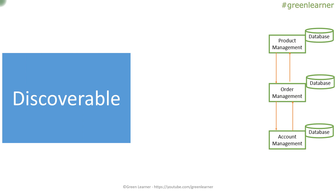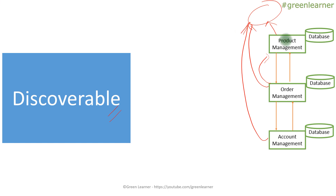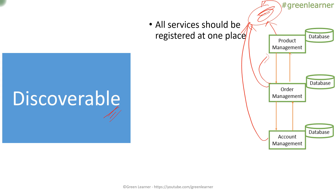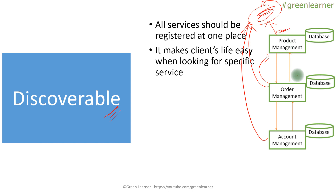The next principle is discoverable. In real time you may have many services, so each service should have information about how to call other services. Each service should be registered at a centralized place. When Product Management wants to call Order Management, it does not call it directly — instead it queries this central registry, which provides the information about how to reach Order Management. This makes the client's life easy: Product Management just provides the name 'Order Management' and gets back all the location and address information.